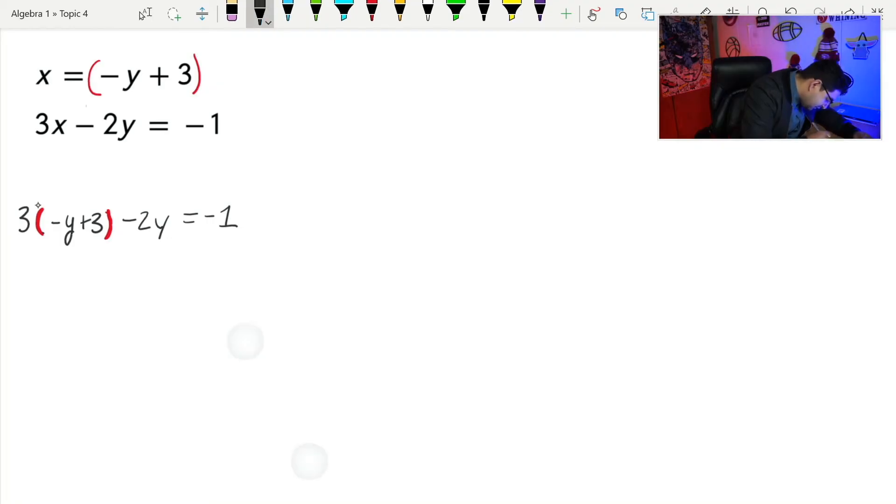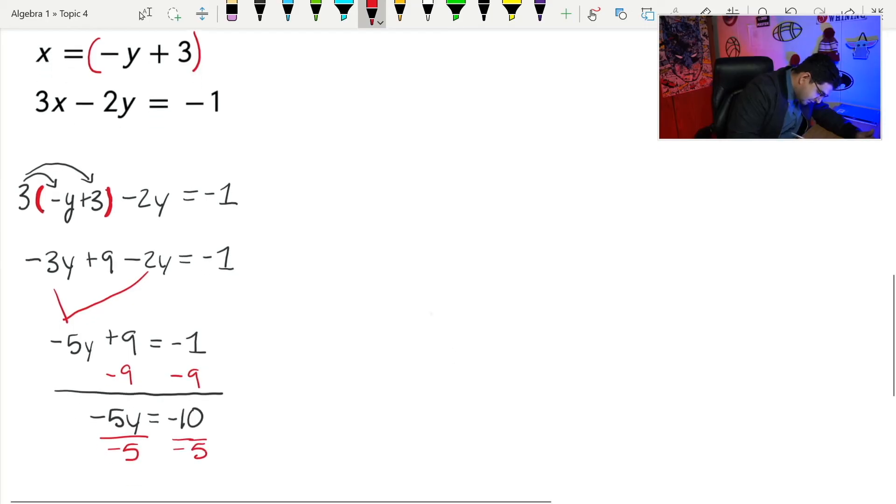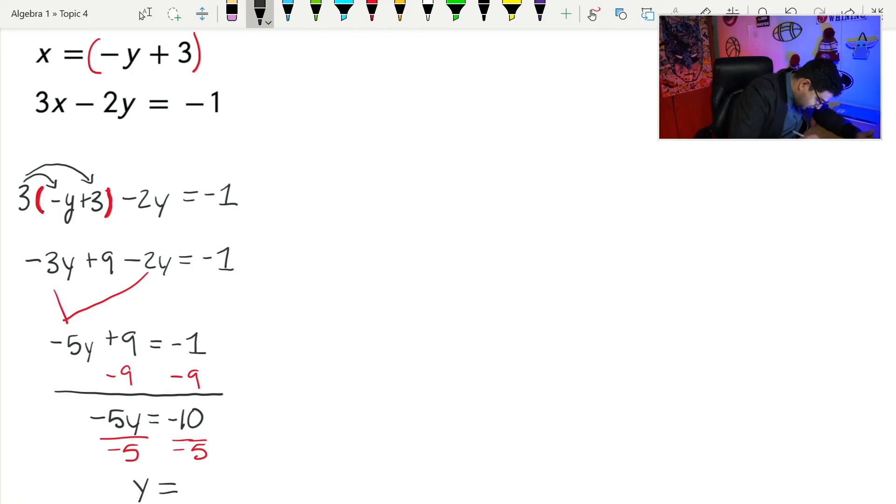And now I go ahead and I distribute. Three times negative y would be negative 3y. Three times three would be a positive nine. And everything else will stay the same. Minus 2y equals negative one. And you'll notice now that when we substitute for x, now we're just left with y's. So unlike the last problem where we solve for x first, in this problem we're going to solve for y first. So now I can combine these two, the negative 3y and the negative 2y. That would give me a negative 5y plus nine equals negative one. I can go ahead and subtract nine from both sides. That leaves me with negative 5y equals negative 10. Then all I have to do now is divide by negative five on both sides. And I end up getting that y is going to equal two.